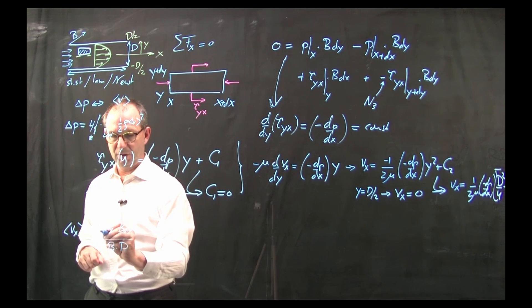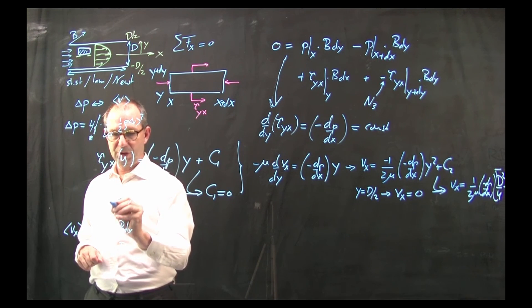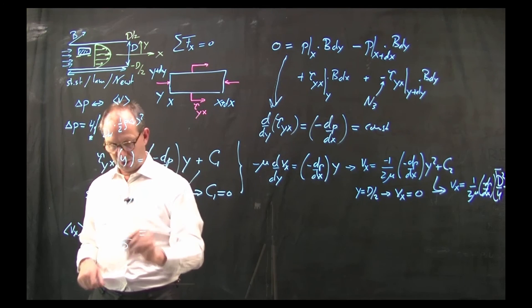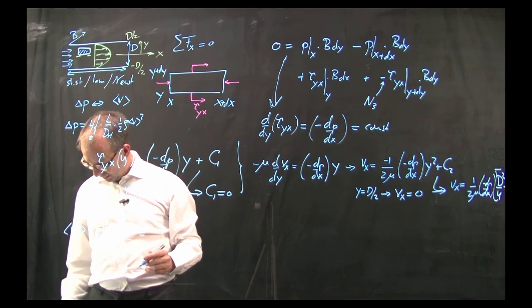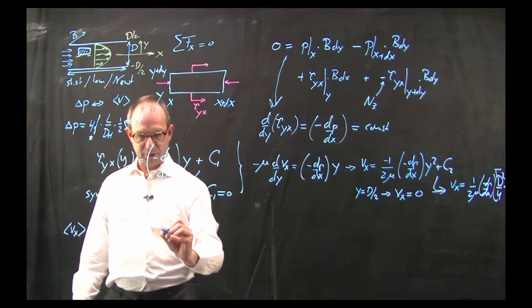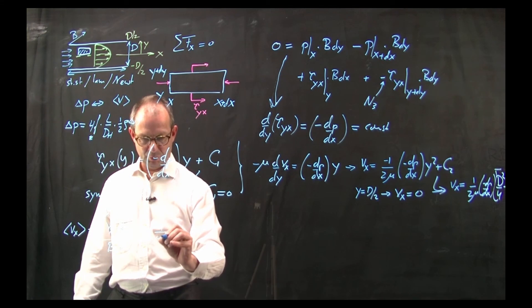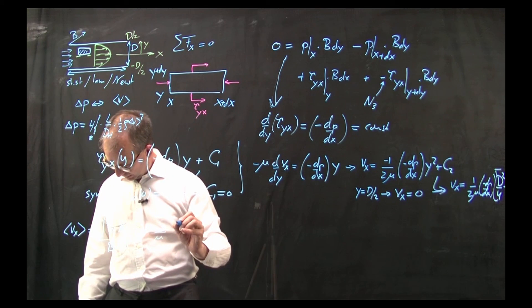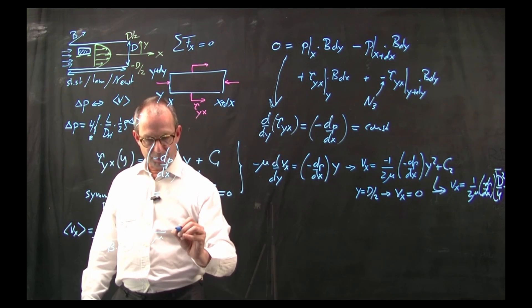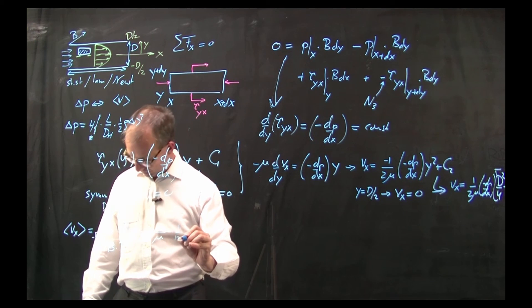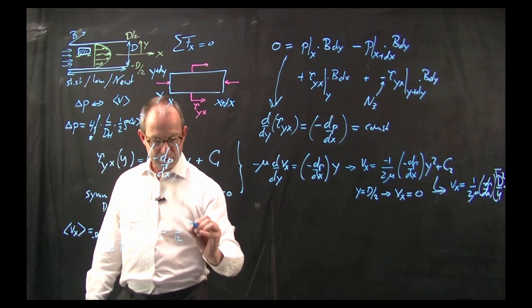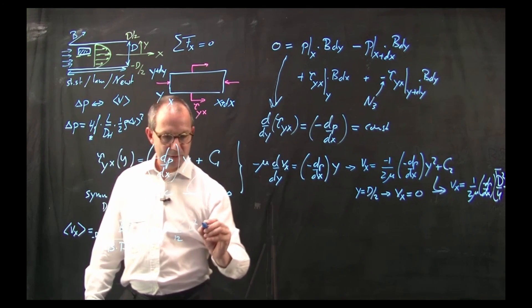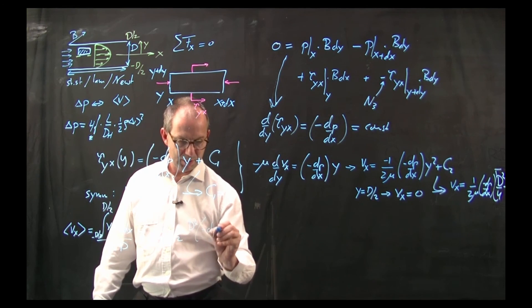That is integrating over the height this velocity profile and that is the integral of Vx times Bdy divided by the total area Bd. And I integrate from minus d over 2 to d over 2. So if I work out this integral, I can scratch out the B's and solve it. Let me just give you the answer.